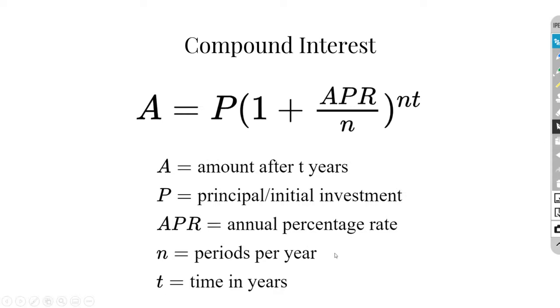n is going to be representative of the compounding periods per year, so that's how many times interest will be charged in a one-year period. And then t is representative of the time in years. So that means that this exponent is representative of the total number of times that interest is compounded.